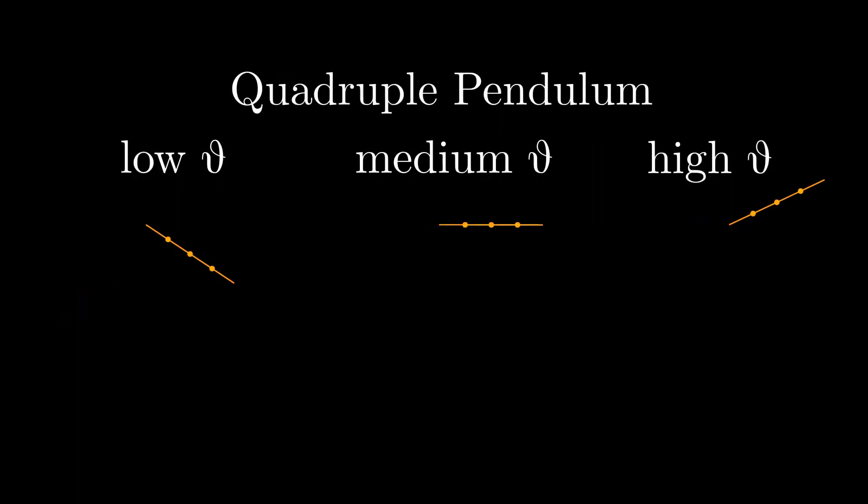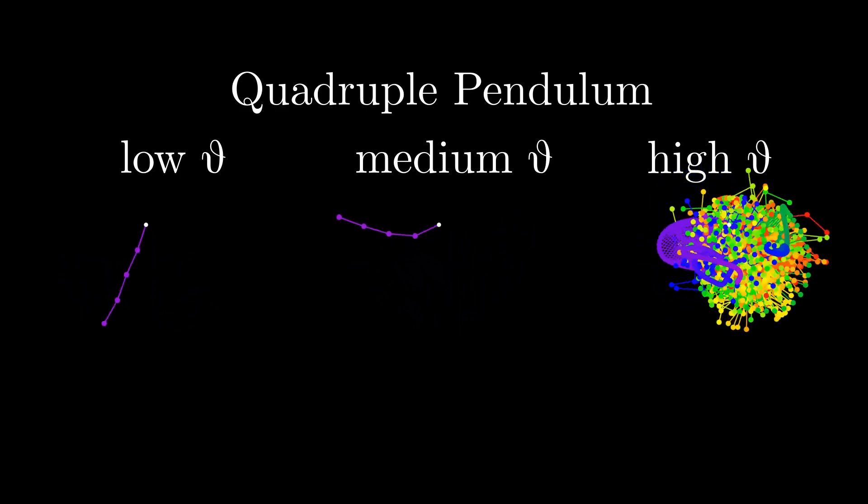Let's now look how the quadruple pendulums behave for different initial directions. As it turns out, they constitute a different case.